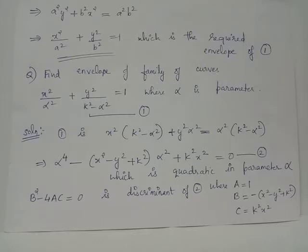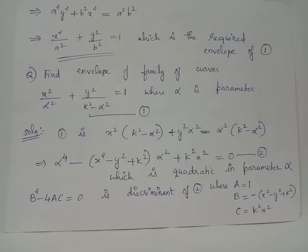Let us call the given equation as equation 1. When you take LCM, equation 1 becomes x² multiplied by (k² - α²) plus y² α², divided by the common denominator α² multiplied by (k² - α²), equals 1.